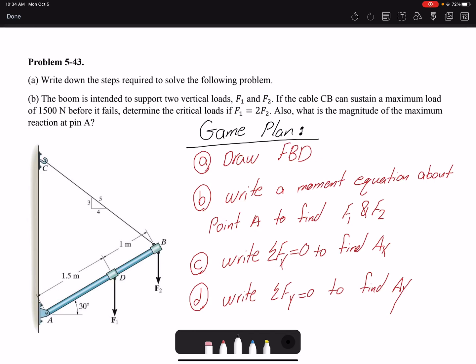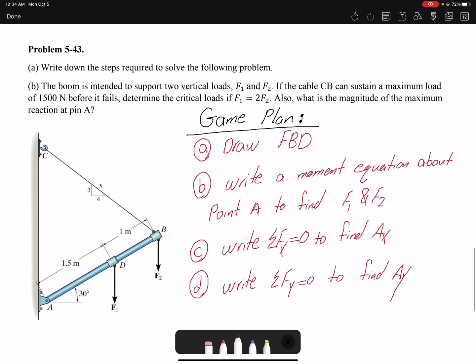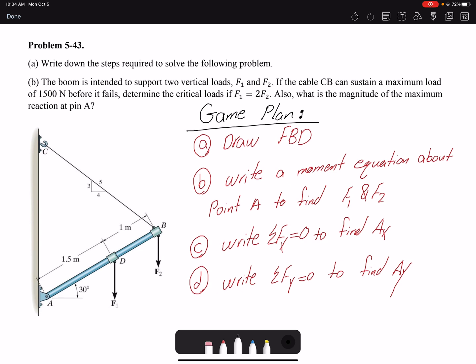Hello everyone, in this video we are going to solve Problem 5-43. The boom is intended to support two vertical loads, F1 and F2. If the cable CB can sustain a maximum load of 1500 Newtons before it fails, determine the critical loads if F1 is twice F2. Also, what is the magnitude of the maximum reaction at pin A?